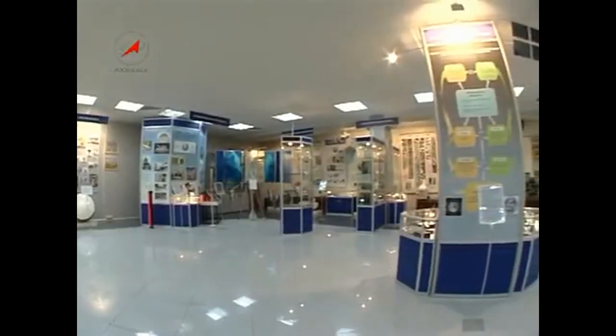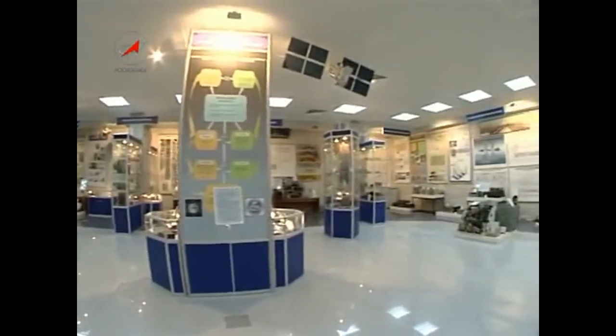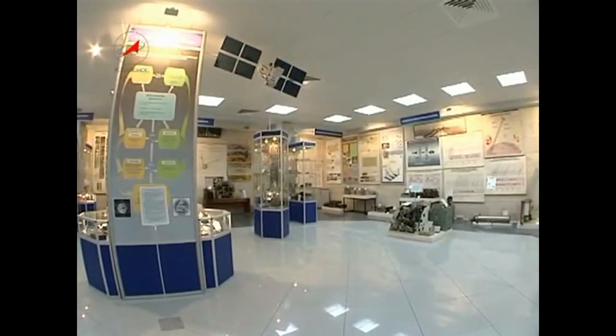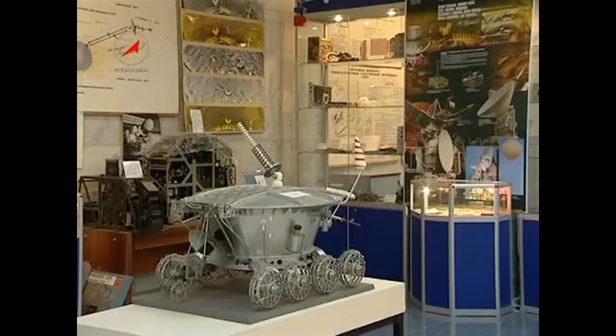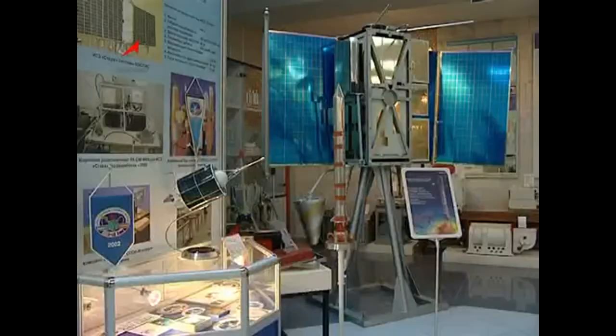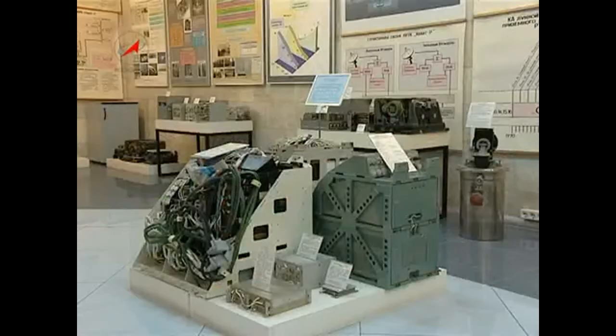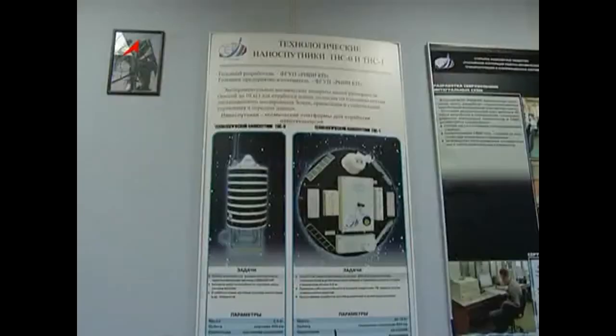The Technical Historical Museum of the Corporation Russian Space Systems. Exhibited there are more than 500 equipment specimens created over more than 60 years. Starting from the onboard control system of the legendary Semyorka up to the nanosatellite, a spacecraft weighing only 10 kilos.